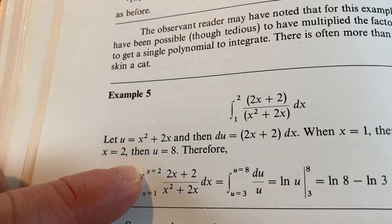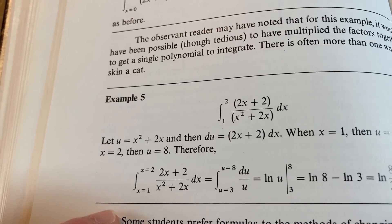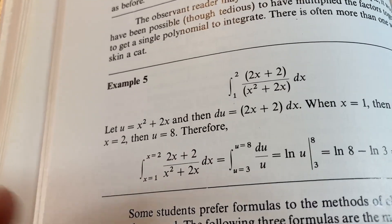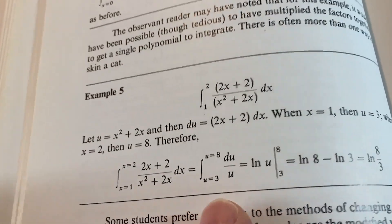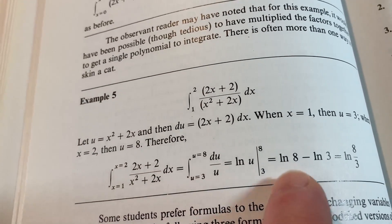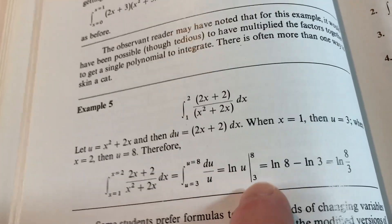So you start with your original integral. Notice how he puts x equals 1 and x equals 2, just for added clarity. It's not really necessary, but he's doing that just to emphasize that these limits are x limits. And then over here, when you make the substitution, you get u limits.